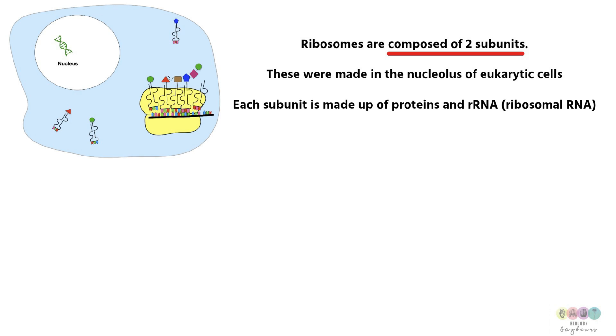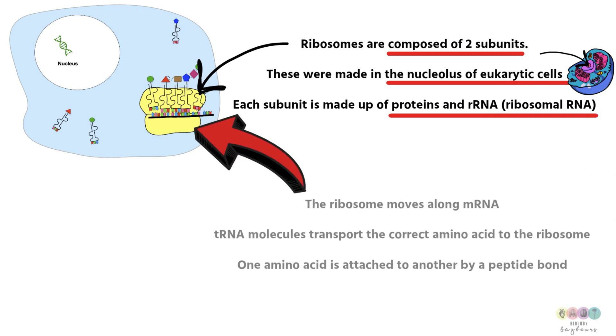So let's talk about the ribosomes. They're composed of two subunits. They were made in the nucleolus of eukaryotic cells. So that dark part of the nucleus in the diagram there. And each subunit is made up of proteins and or RNA, ribosomal RNA.